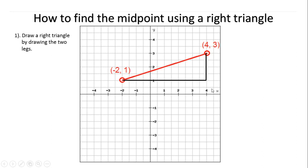The next thing you do is find the midpoint for each of the legs. If you look at the bottom leg here and count, this segment is 6 units long. So the middle of that 6 units would be 3 units. You would count 1, 2, 3 and it would end up right here where the 1 is. So that's the midpoint of that leg.